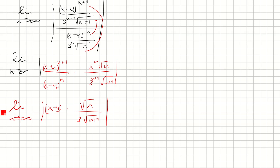Now I can factor out the x minus 4 because it does not depend on n, and you factor outside as an absolute value.